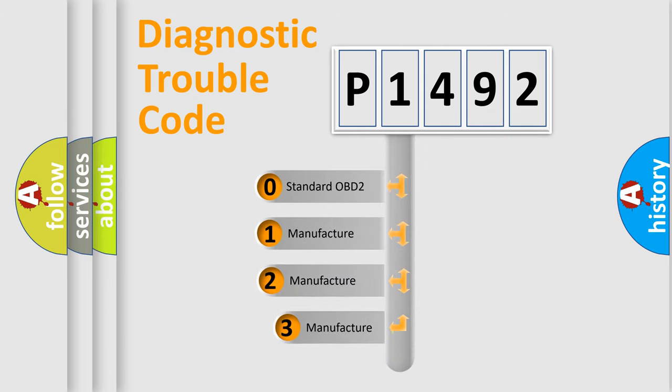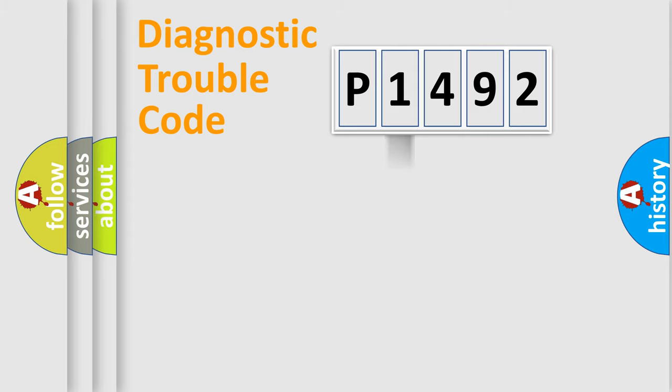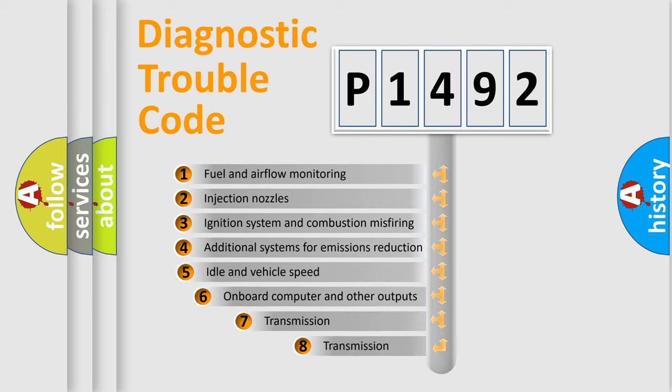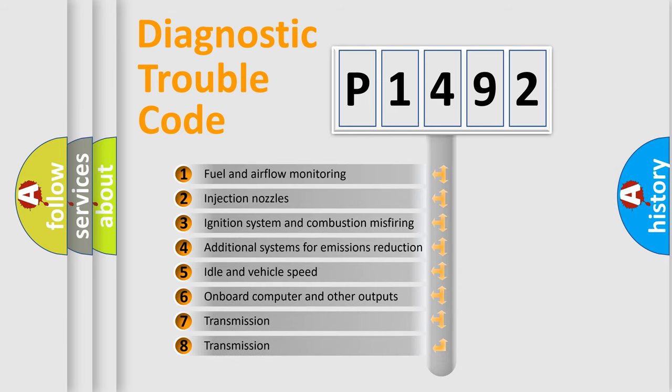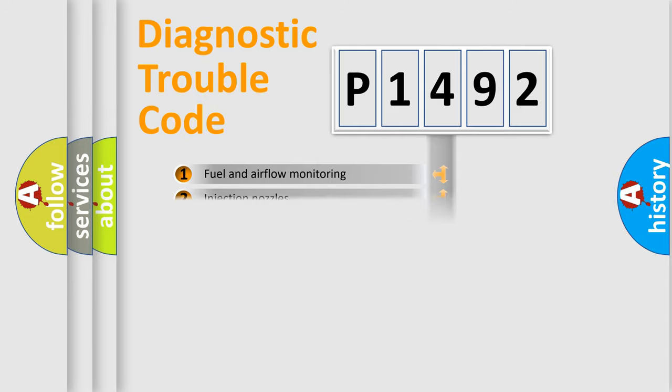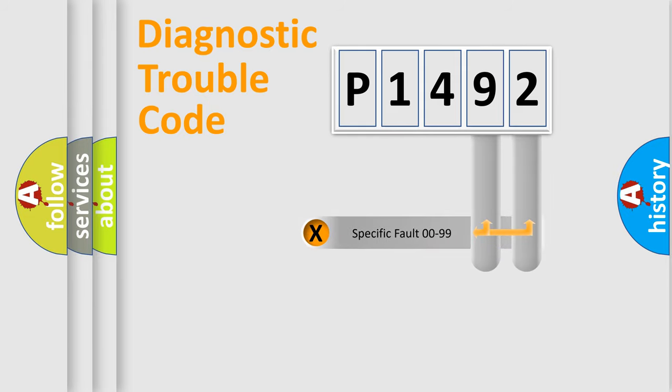If the second character is expressed as zero, it is a standardized error. In the case of numbers 1, 2, 3, it is a manufacturer-specific expression of the car error. The third character specifies a subset of errors. The distribution shown is valid only for the standardized DTC code. Only the last two characters define the specific fault of the group.